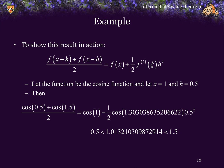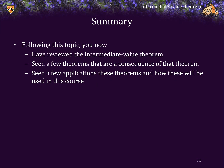If we were to make h smaller, then this point xi would again be another point but again it would be in that smaller interval. Following this topic, you have now reviewed the Intermediate Value Theorem, seen a few theorems that are consequences of it, and seen applications of these theorems and how these results will be used in this course, along with a few examples.